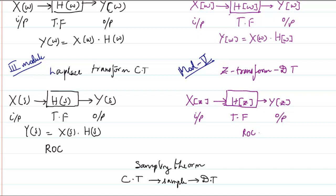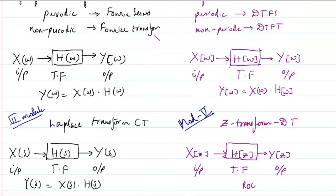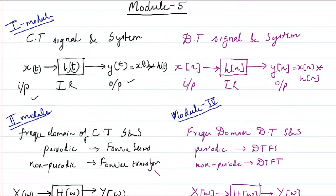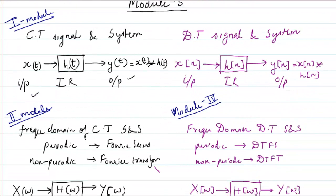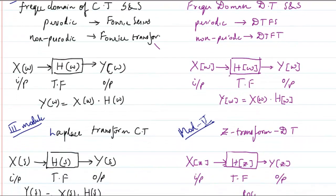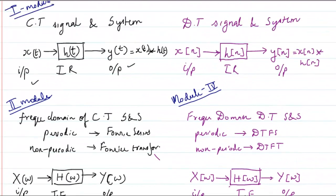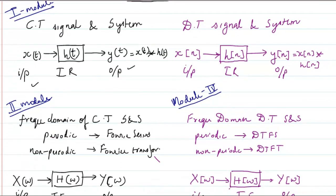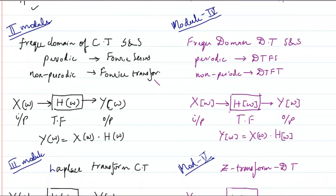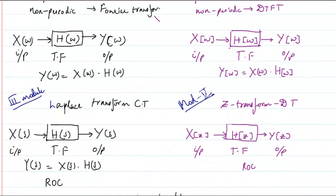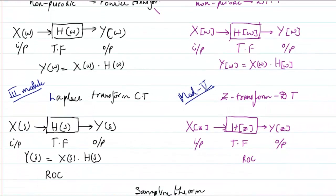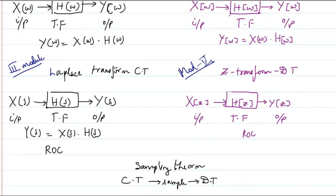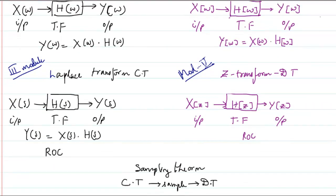This is the whole picture of what your Signals and Systems subject looks like. I have drawn continuous time signal topics in black and discrete time signal topics in magenta, along with which modules they belong to. This is the big picture of what you have to study in this subject. So, let us move to Z transform.